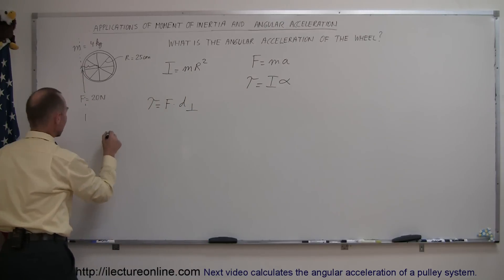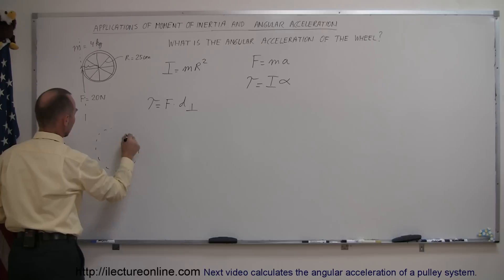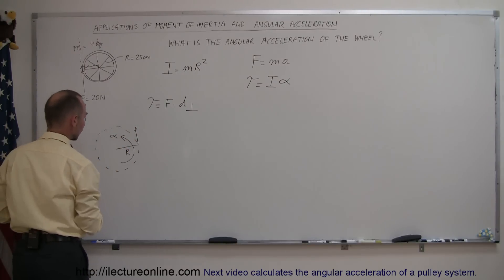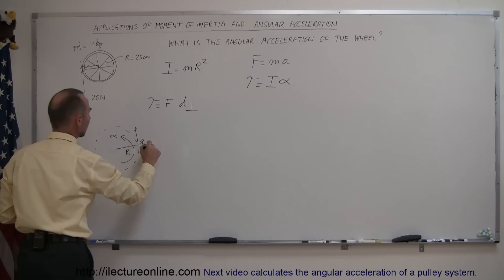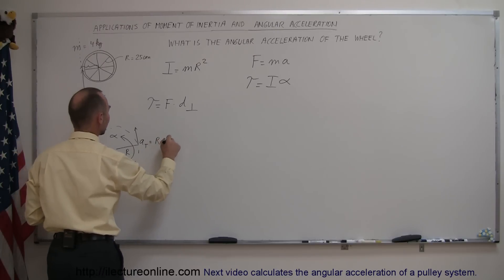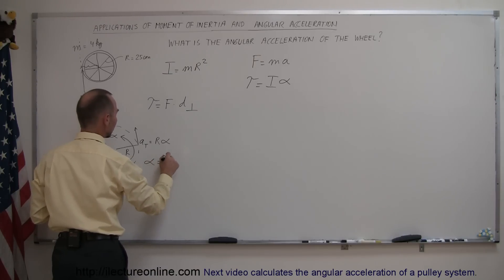And again, if we think of a rotating object that has radius r and has an angular acceleration alpha, then what is the tangential acceleration? And of course, a tangential will be equal to r times angular acceleration, or the angular acceleration can be expressed as the tangential acceleration divided by r.